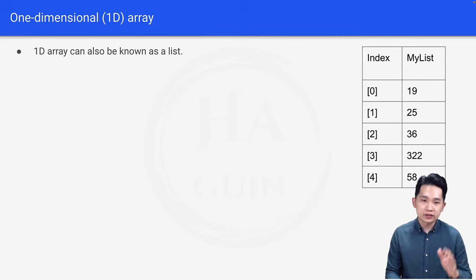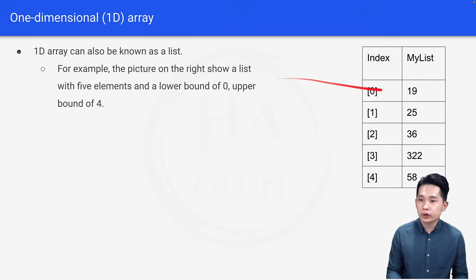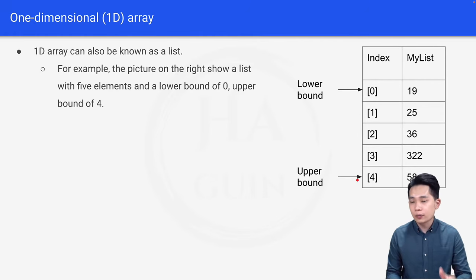1D array can also be known as a list. For example, the picture on the right here shows a list with 5 elements and a lower bound of 0. So this is a lower bound here and upper bound of 4. So this last element here is the upper bound of this array.